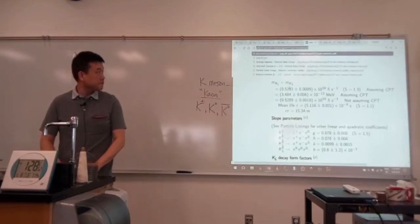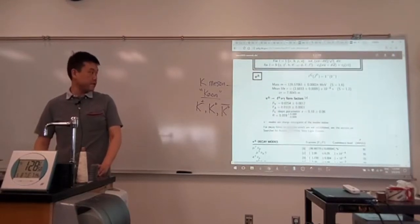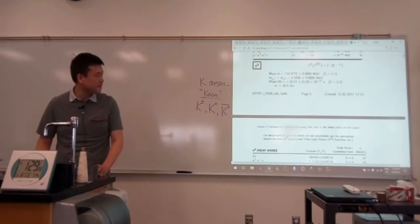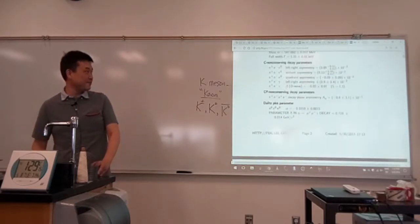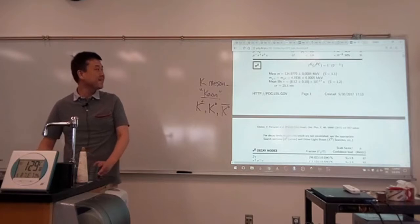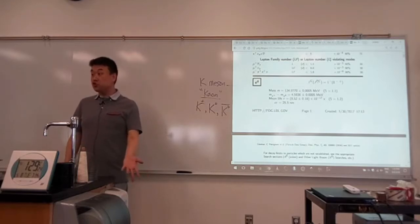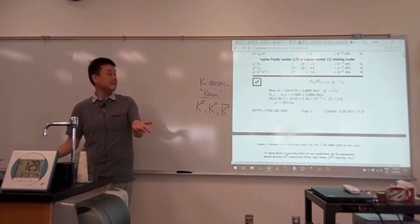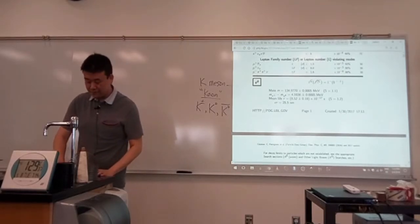When you look at the pi meson, there's a definite lifetime difference. The charged one lives for 10 to the minus 8 seconds, and the neutral one, it lives for 10 to the minus 17. But you agree, it's still strange that the neutral pi meson somehow lives only for 10 to the minus 17 seconds, but the neutral k-meson lives, so whichever version you look at, the short-lived version or the long-lived version, it lives at least 10 million times longer.